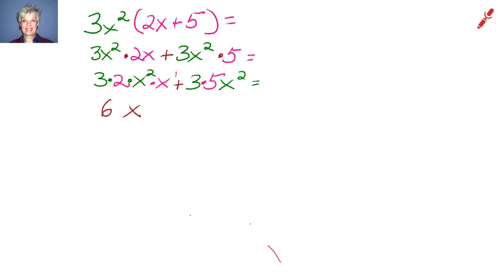And that gives us 6x to the 2 plus 1. Remember, if we multiply like bases, we add the exponents. So our final answer is 6x³ plus 15x².